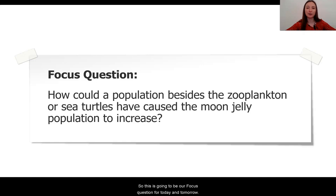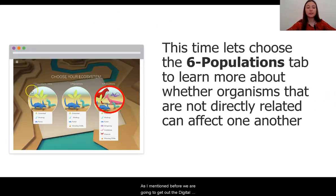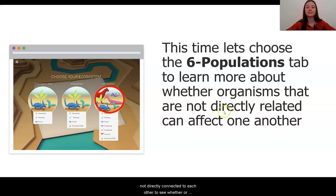This is going to be our focus question for today and tomorrow: how could a population besides the zooplankton or the sea turtles have caused or had an effect on the moon jelly population increase? We are going to get out the digital model to do some investigating. Because we are focusing on organisms in the ecosystem that are not necessarily directly related to the moon jelly, we are going to use the six populations digital model.